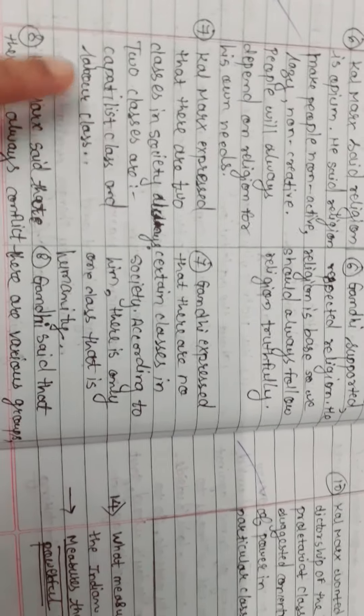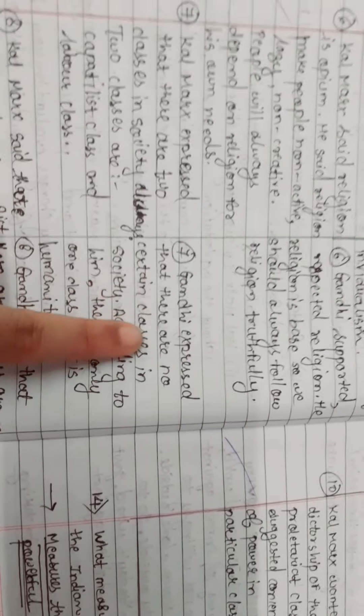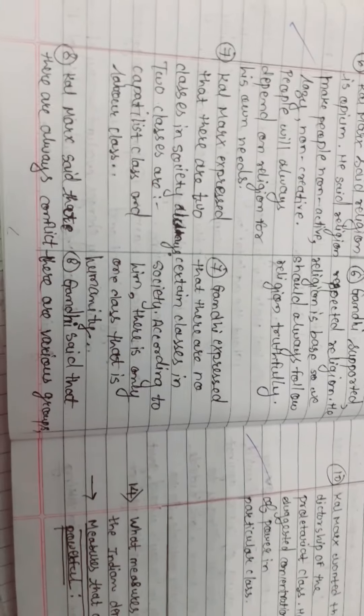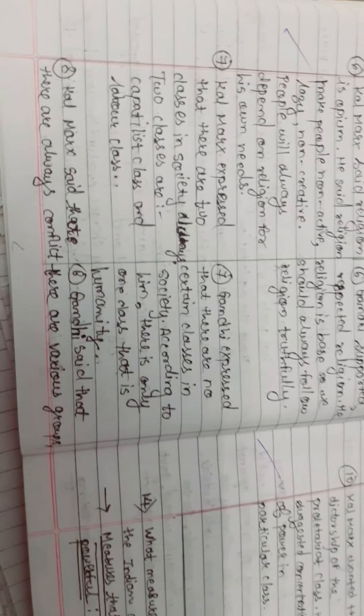Karl Marx expressed that there are two classes in society always, the capitalist class and labor class. But Gandhi expressed that there are no certain classes in society. According to him, there is only one class, that is humanity.